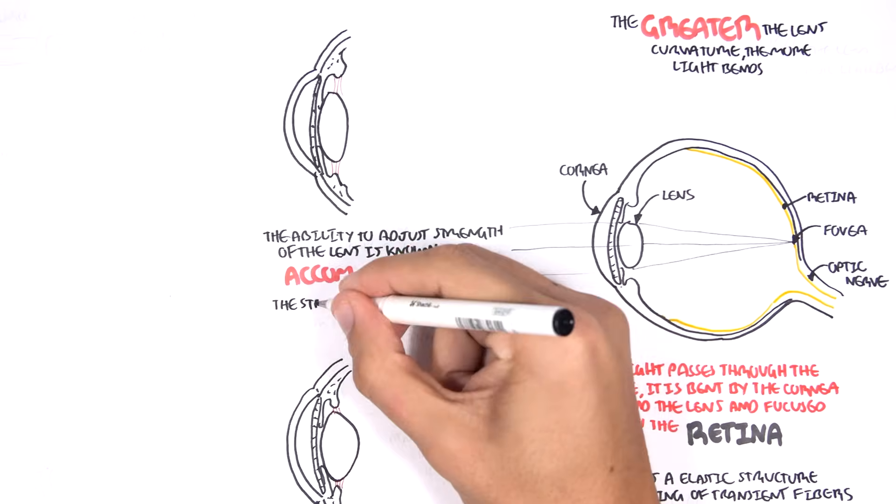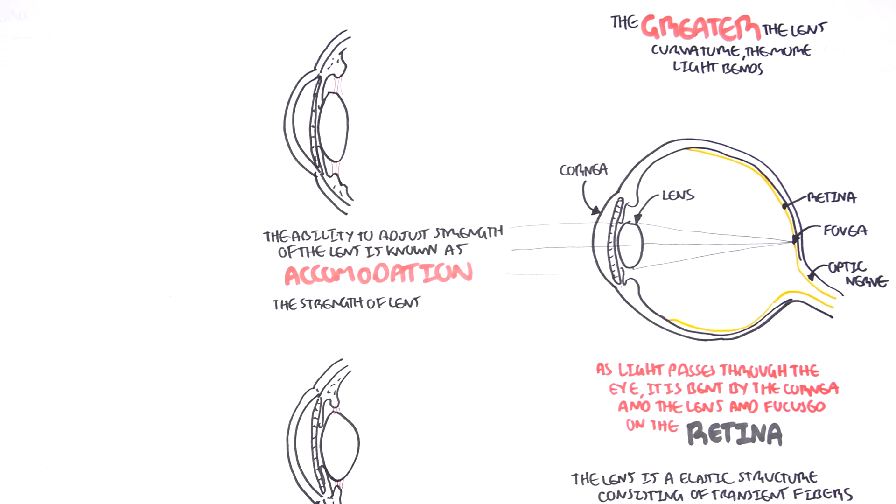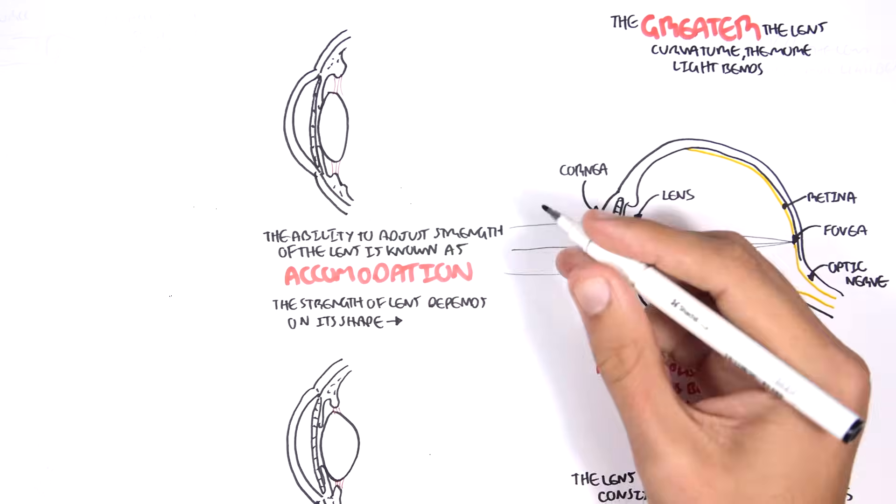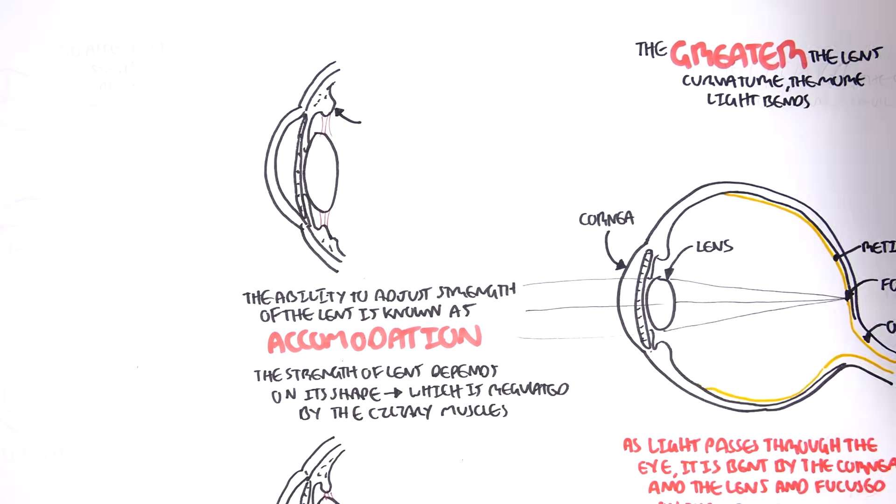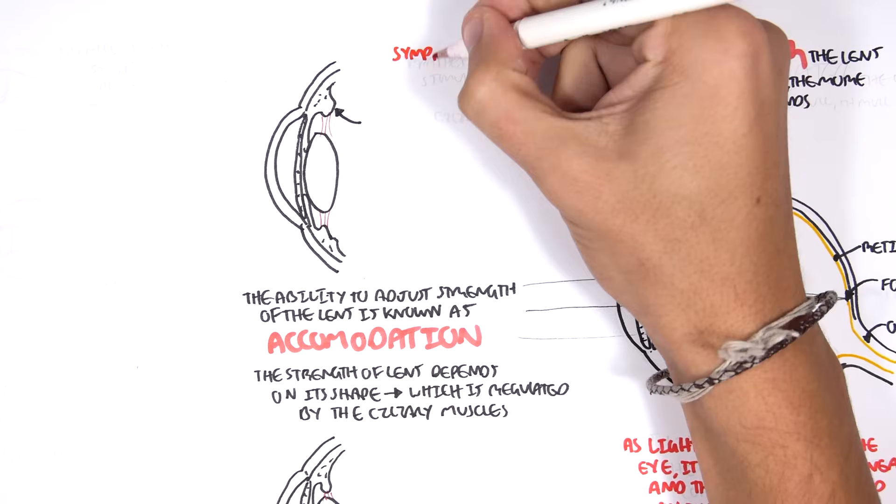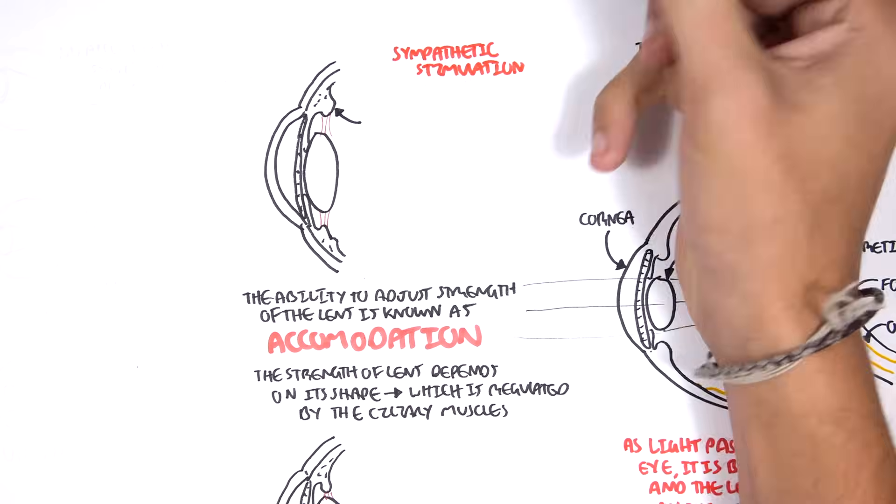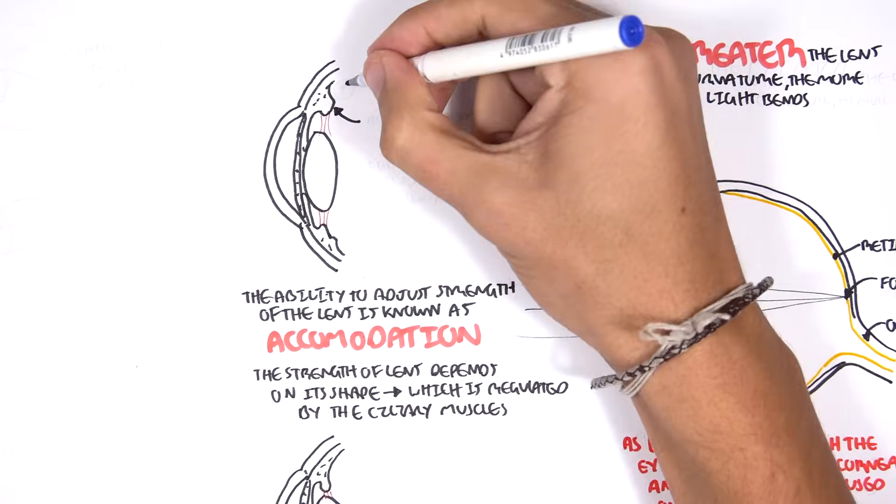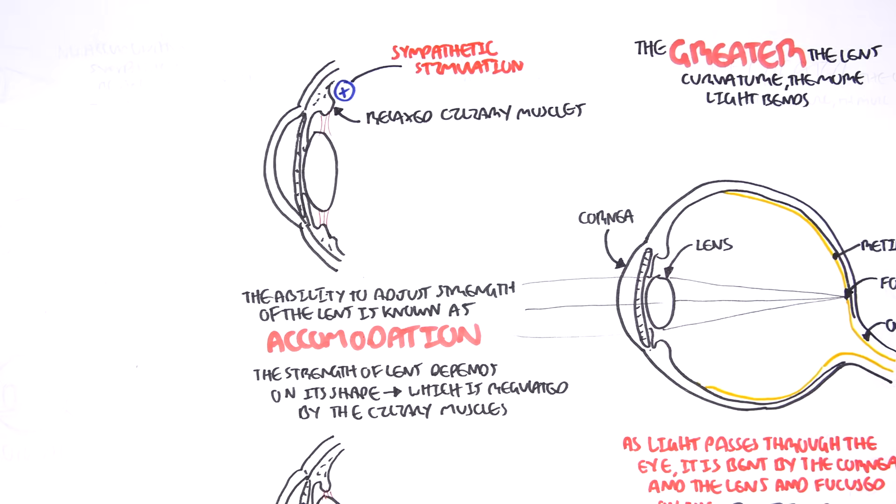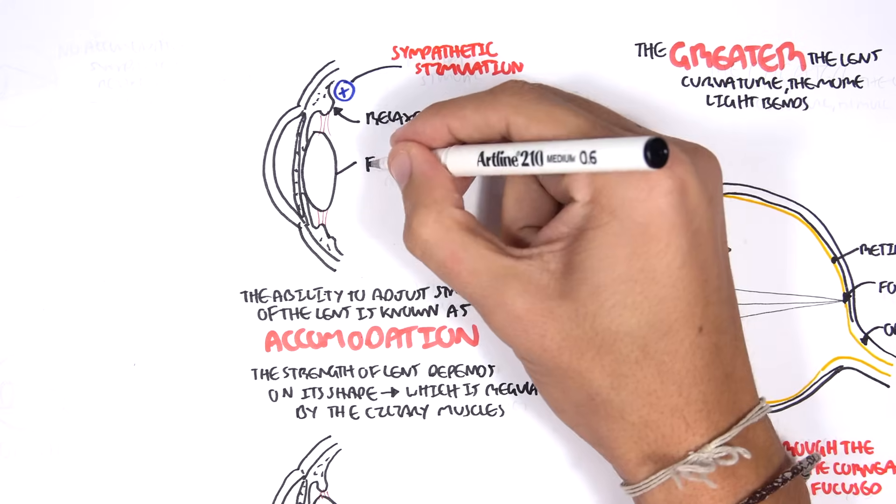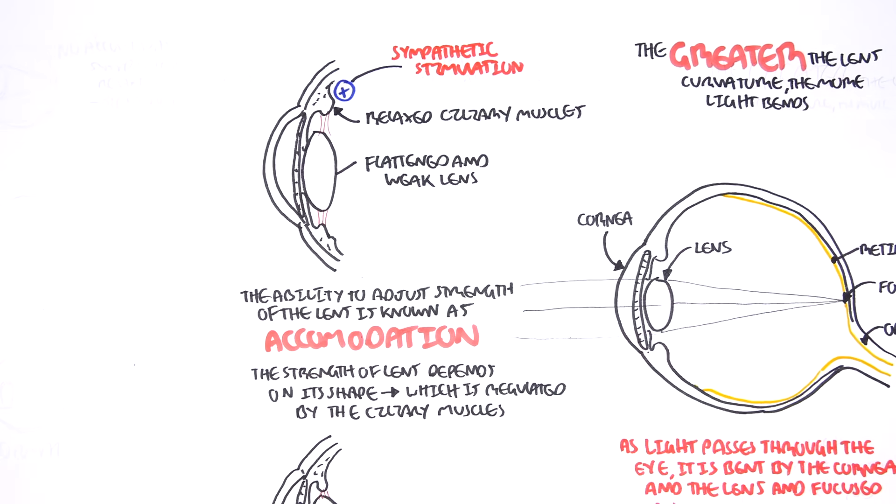The strength of the lens depends on its shape, which is regulated by the ciliary muscles. Sympathetic stimulation causes the ciliary muscles, the bodies, to relax, and this will cause the lens to flatten and weaken.